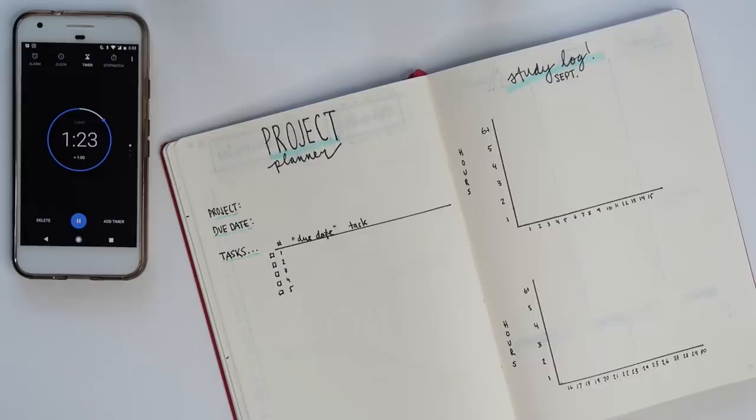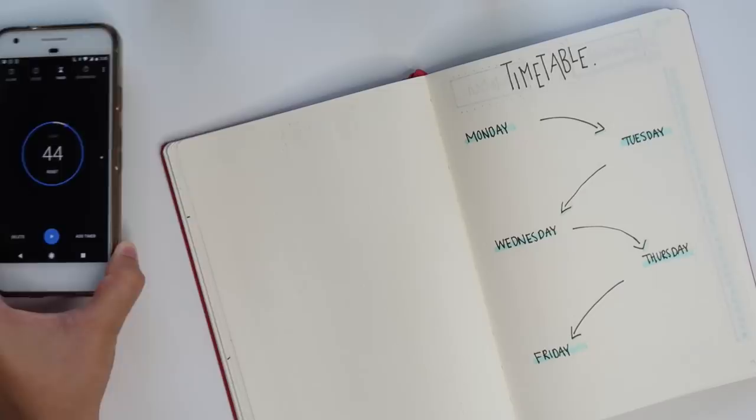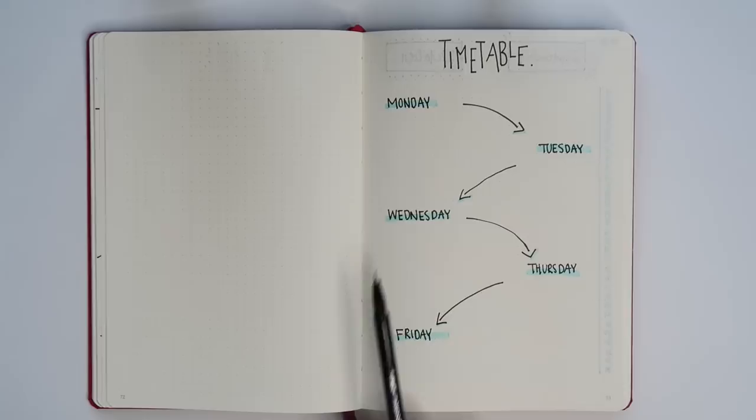As you guys can see I finished this spread with 44 seconds to spare. Let's walk through the pages. I'm starting off with a timetable spread. Timetables are some of my most popular spreads for student bullet journaling and this is a really simple one. Essentially under each date you would just write which classes you have.